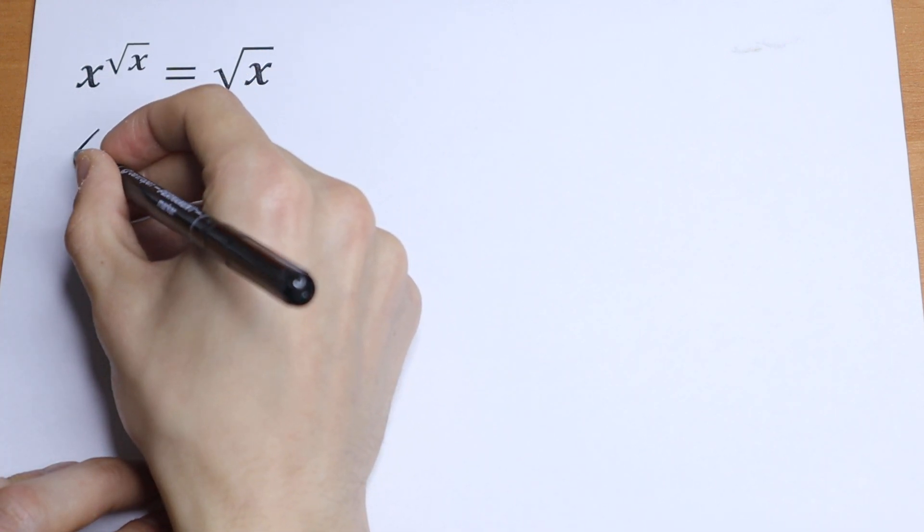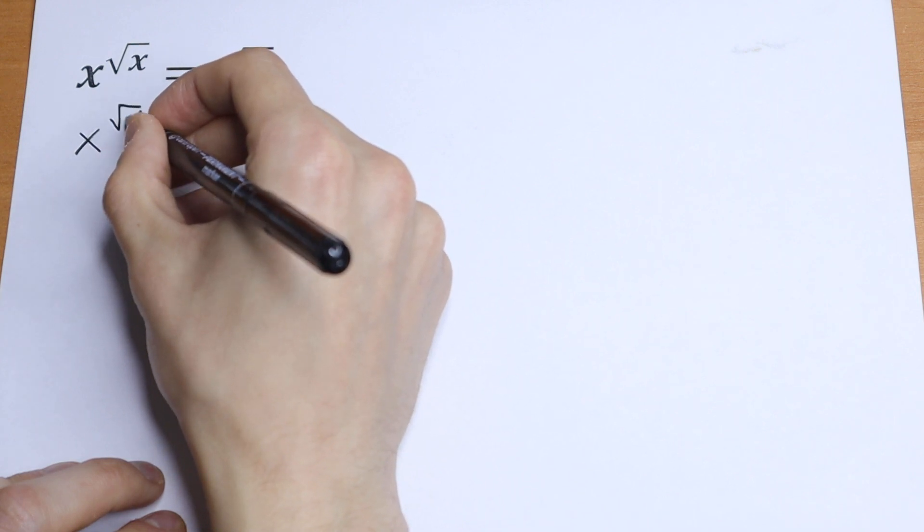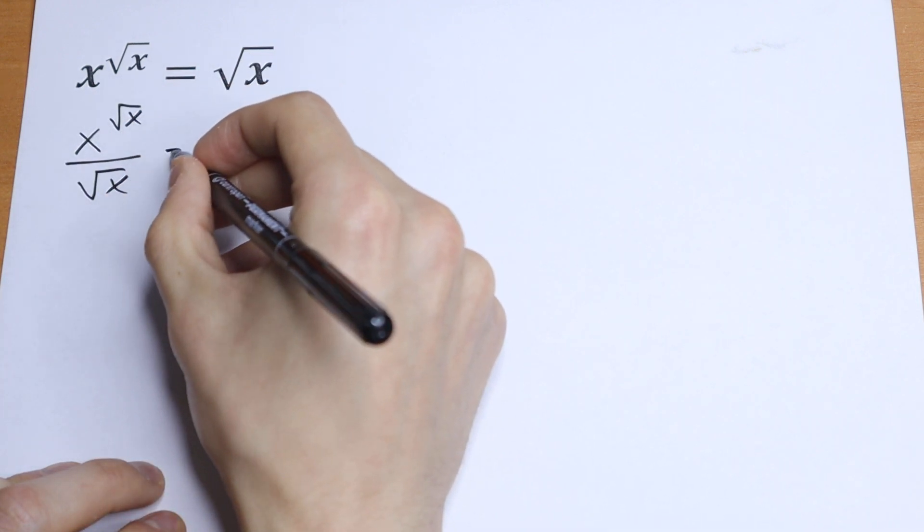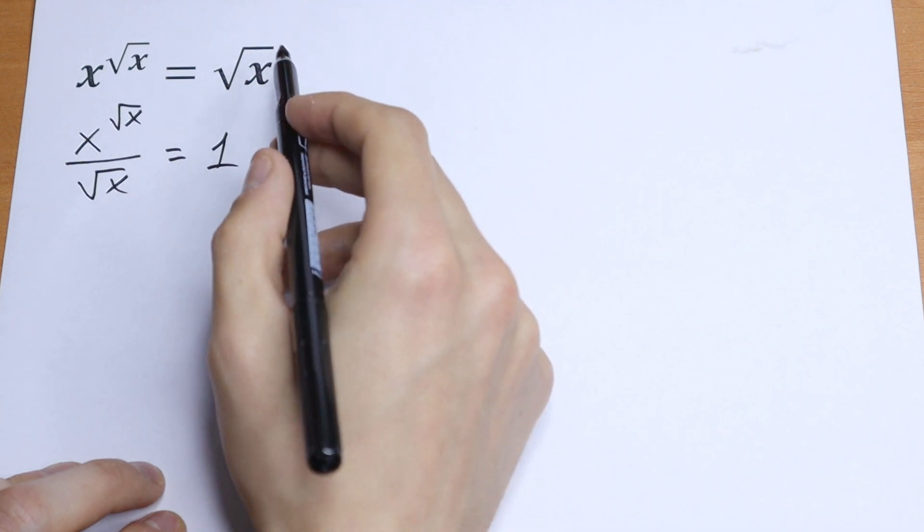We will have x to the power square root of x over square root of x, equal to 1 because we divided both sides.